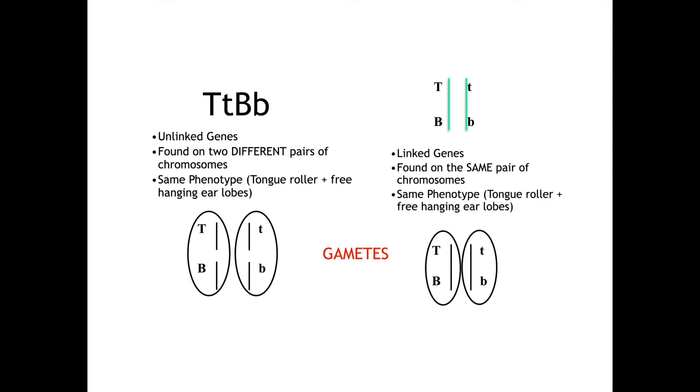Question two, what can we determine by these two layouts? Well, the layout on the left-hand side represents unlinked genes, very important for you to be able to distinguish this, especially when it gets to the IB exam, whereas the layout on the right-hand side represents linked genes. So even though they both give the same phenotype, tongue roller and free hanging earlobes, the left is unlinked versus the right, which is linked.